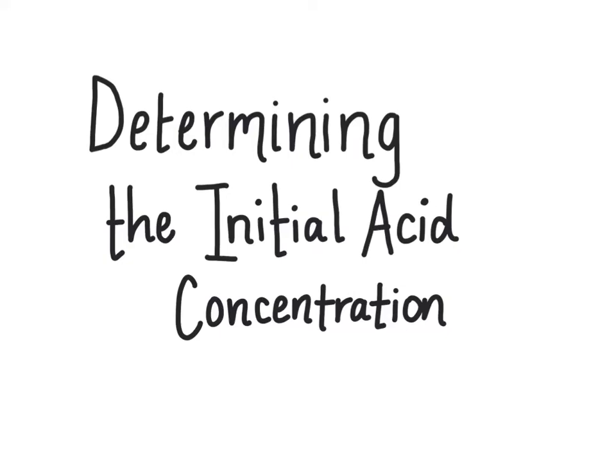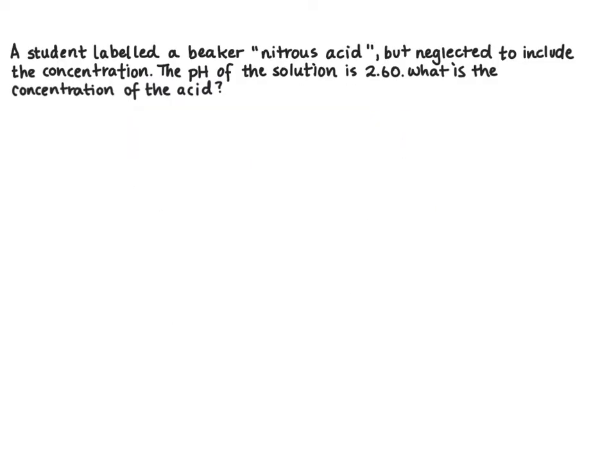In this video we're going to be looking at how to determine the initial acid concentration if you have the Ka and the pH. A student labeled a beaker nitrous acid but neglected to include the concentration. The pH of the solution is 2.6. What is the concentration of the acid?